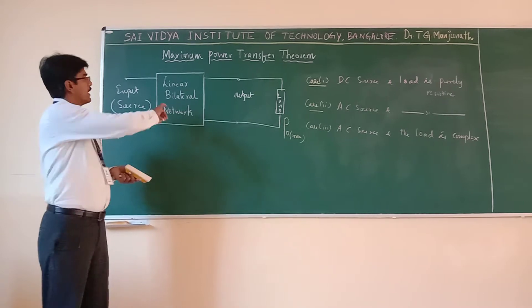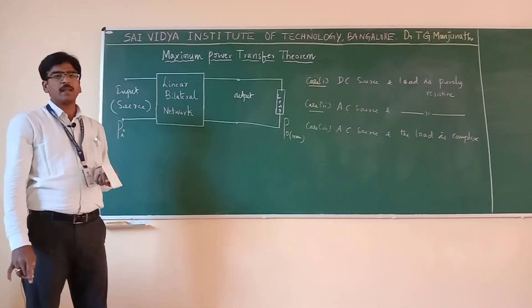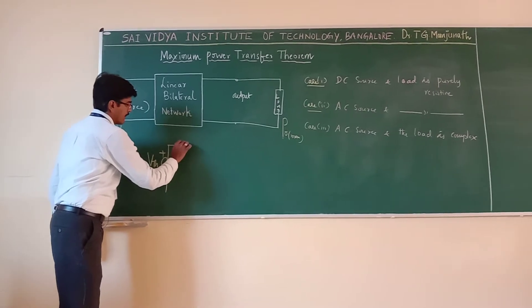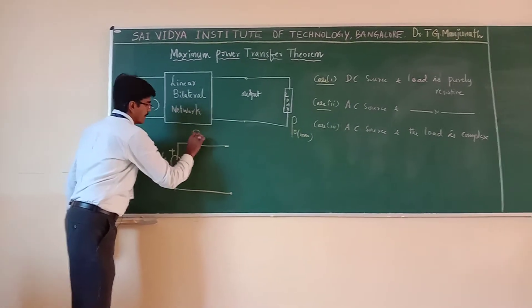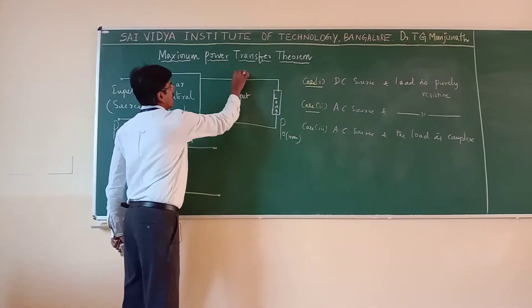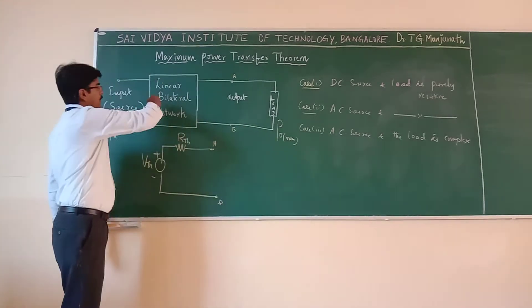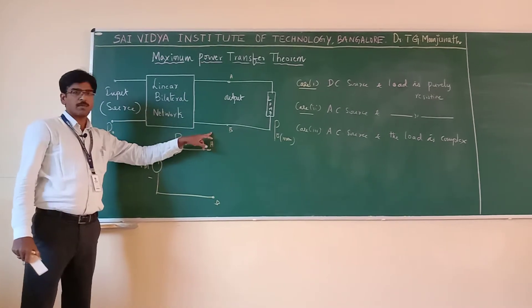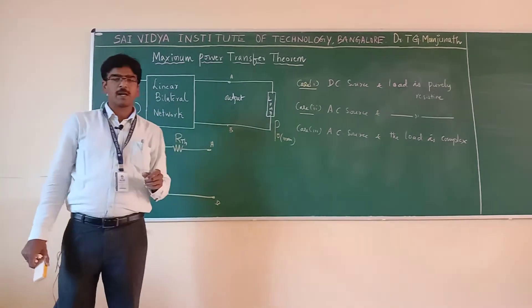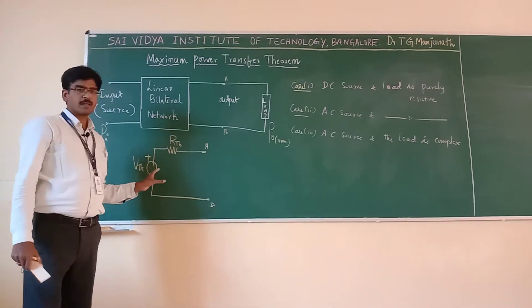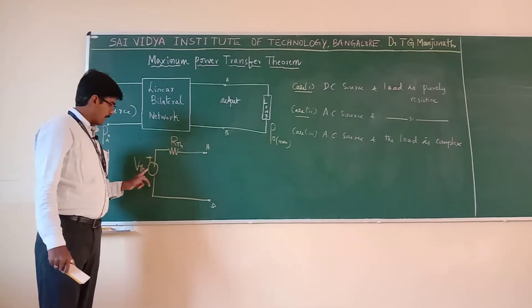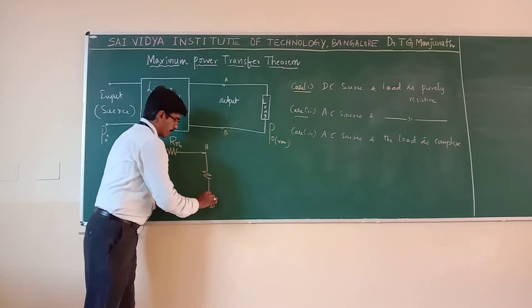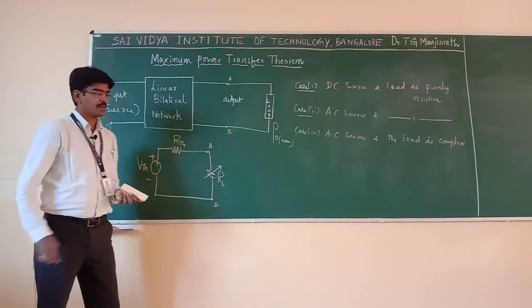We know that in Thevenin's theorem, any linear bilateral network can be replaced by a single voltage source V_Thevenin in series with a resistance or impedance Z_Thevenin across terminals A and B. So to derive the condition of maximum power transfer theorem, I will take such a simple equivalent circuit considering three cases. Case 1: DC source with a purely resistive variable load.